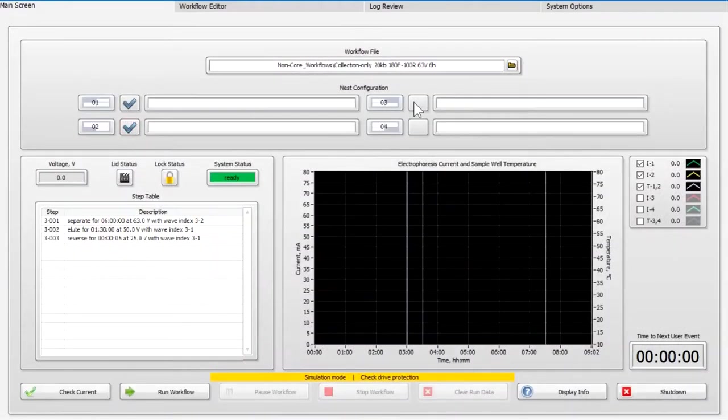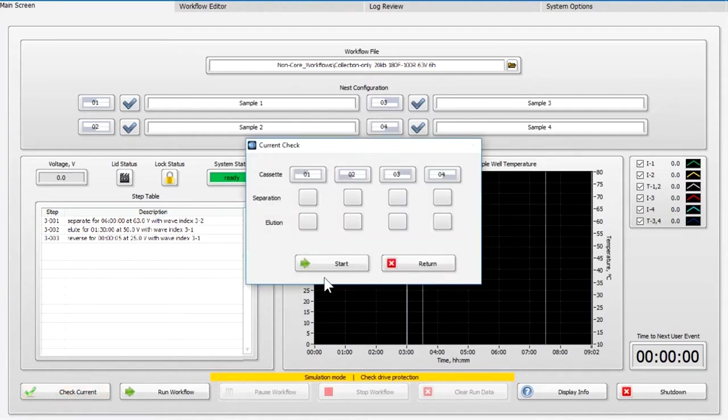Place a check mark next to the sample that will be run and enter an optional sample ID if preferred. Press the check current button. This will engage the electrodes to the cassette and check the electrophoresis currents in the separation and elution pathways. This will take a minute or so and provide an indication that the test was successful. If a test has failed, the cassette or lane may not have been properly prepared.